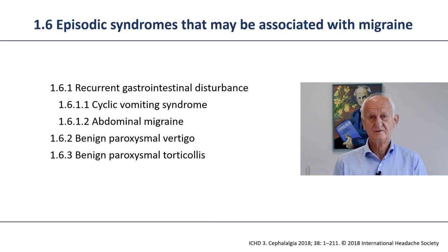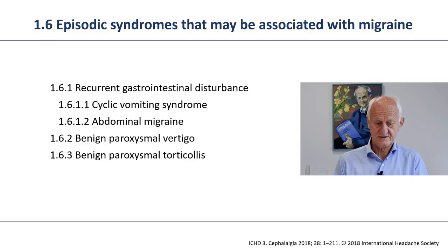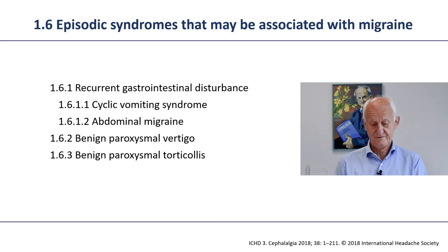When you move on to the major divisions, you get to the second digit. Here is an example of episodic syndromes that may be associated with migraine, starting with two digits: 1.6. You can then go to three digits — for example, recurrent gastrointestinal disturbances — and even to a fourth digit, such as cyclic vomiting syndrome. This is called a hierarchical classification system. The virtue of this hierarchy is that the classification can be used at all different levels of the healthcare system.